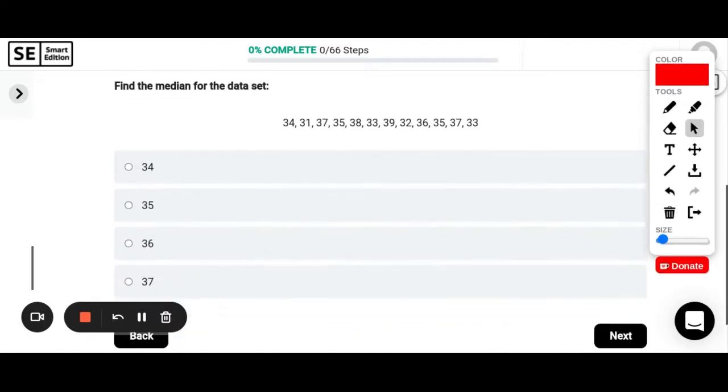Okay, find the median for the data set. So we have a set of data here and we need to put it in order from least to greatest in order to find the median. So we put it in order from least to greatest because median means middle. This means the middle. So we need to put this in order to find the middle. So I'm just going to go through and I like to cross them off as I list them to make sure that I don't forget any number.